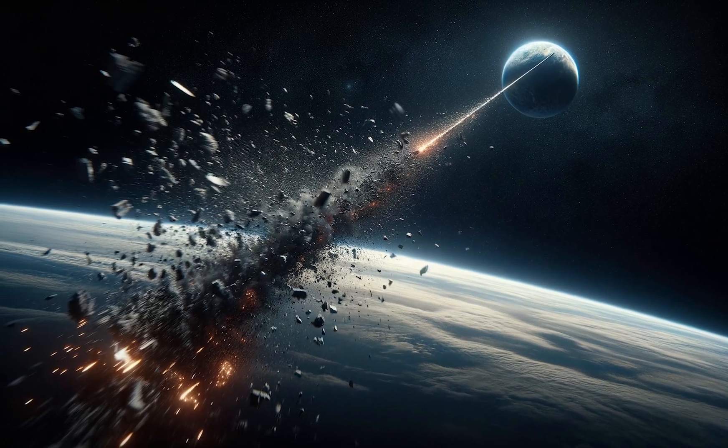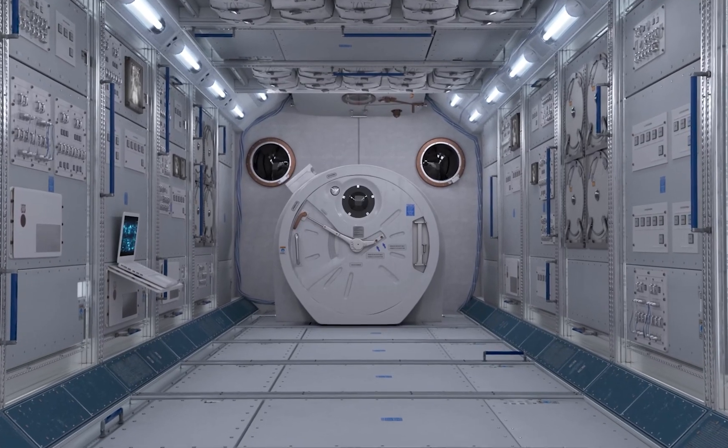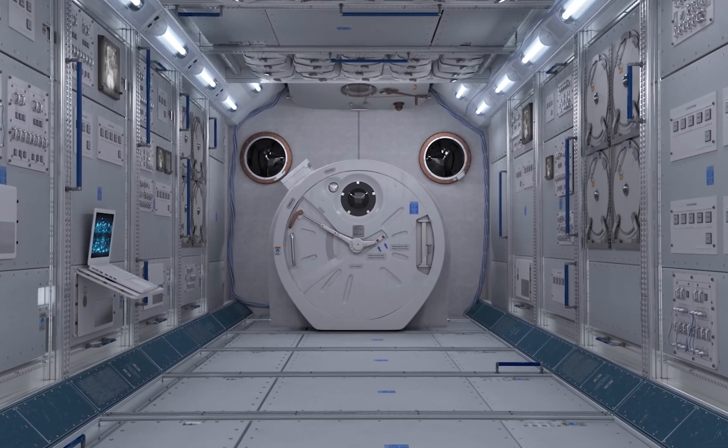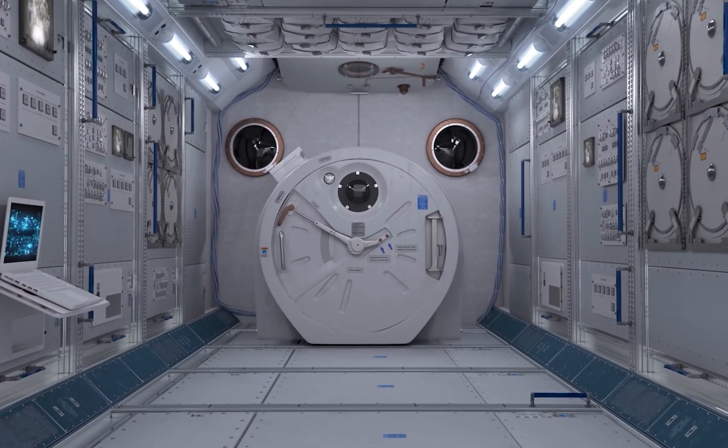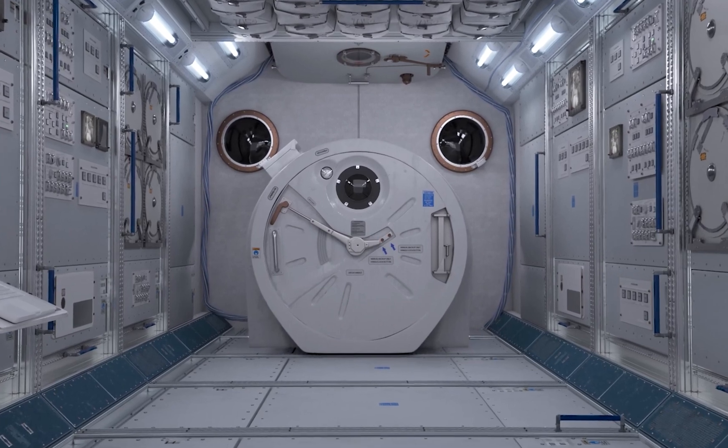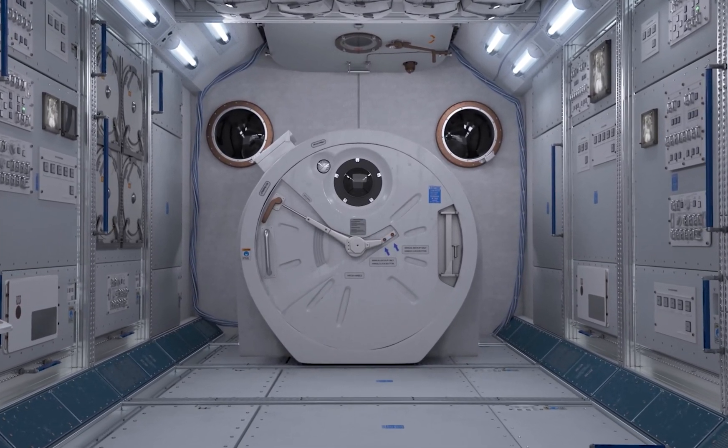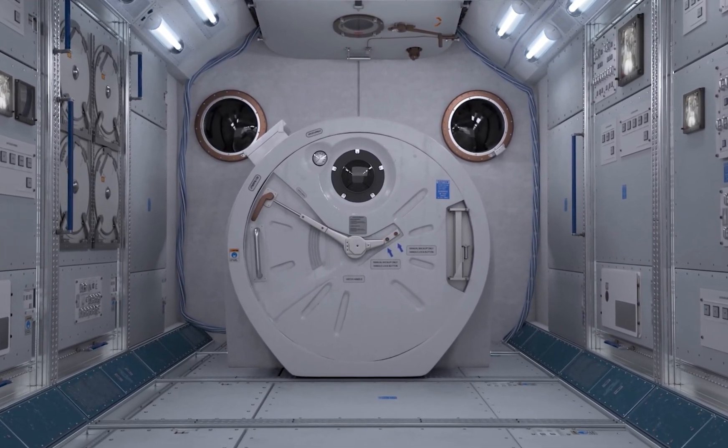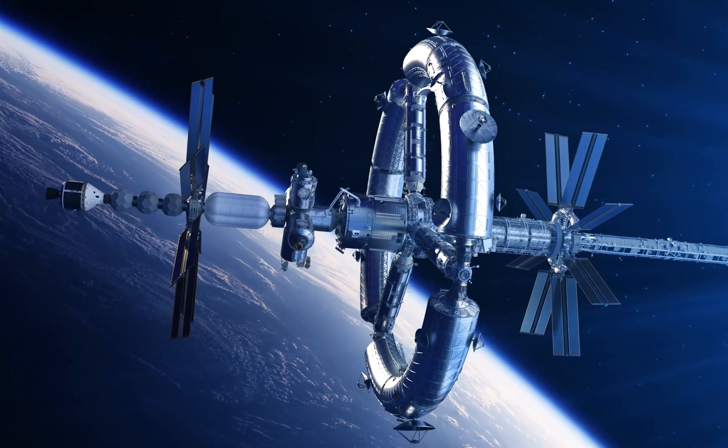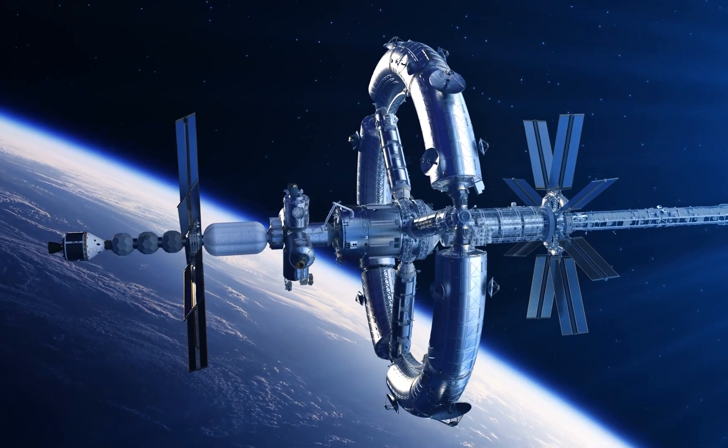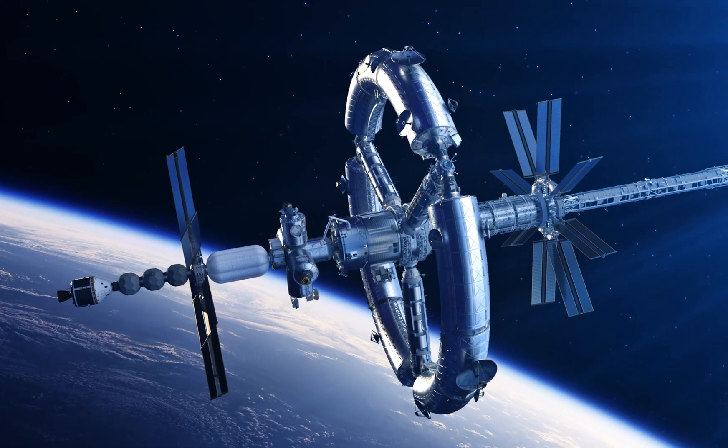The space elevator scientists and engineers would have all sorts of plans to keep things tidy and safe, from picking tough materials to constantly checking for wear and tear, and maybe even having repair bots on standby. They'd do everything to avoid a space catastrophe, and if something did go wrong, they'd have plans to make sure the fallout avoids cities and people as much as possible.